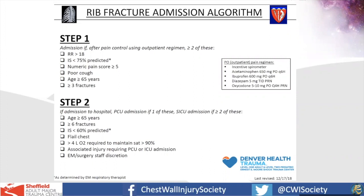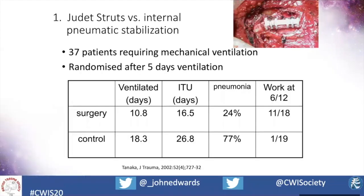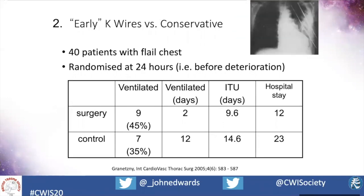Moving towards patients you might want to operate on, before guidelines we have to consider the evidence base from past and current studies. There were four or five studies that sat with us for a number of years. The first used struts that squeezed around the ribs — Tanaka's study from about 20 years ago — a small study where patients were randomised five days after ventilation. There were beneficial outcomes in the surgery group.